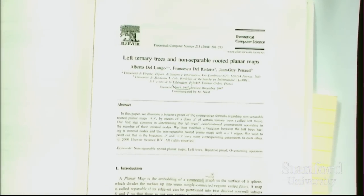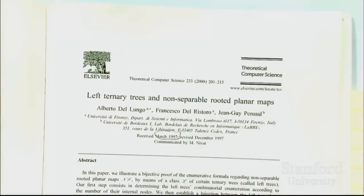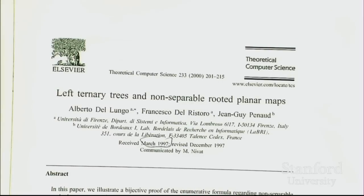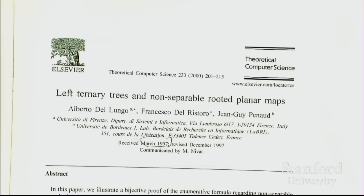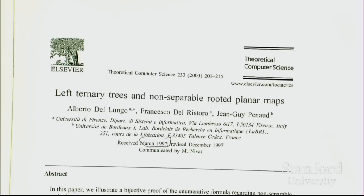I start with an article from a journal. This work goes back a little more than 15 years, to the middle of the 90s, by some people in Florence and Bordeaux. They wrote a paper called 'Left Ternary Trees and Non-Separable Rooted Planar Maps.' I just happened to stumble across it while looking at a completely different topic — satisfiability — because the same authors worked on that and I saw it in their vita. The more I looked at this, the more I loved it, so I'll try to explain the whole point.